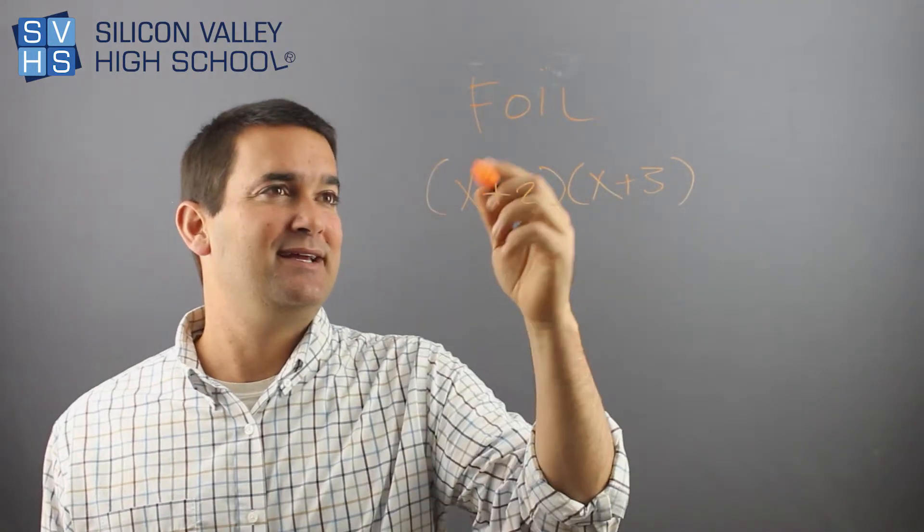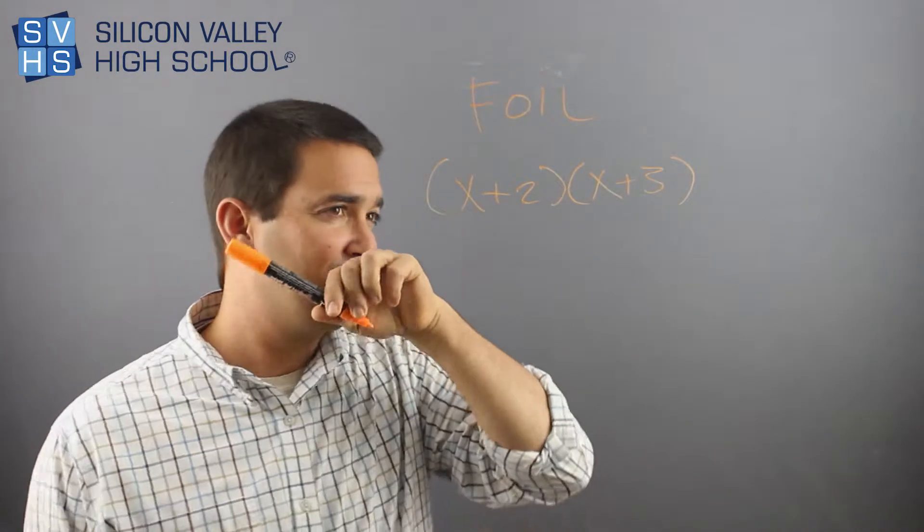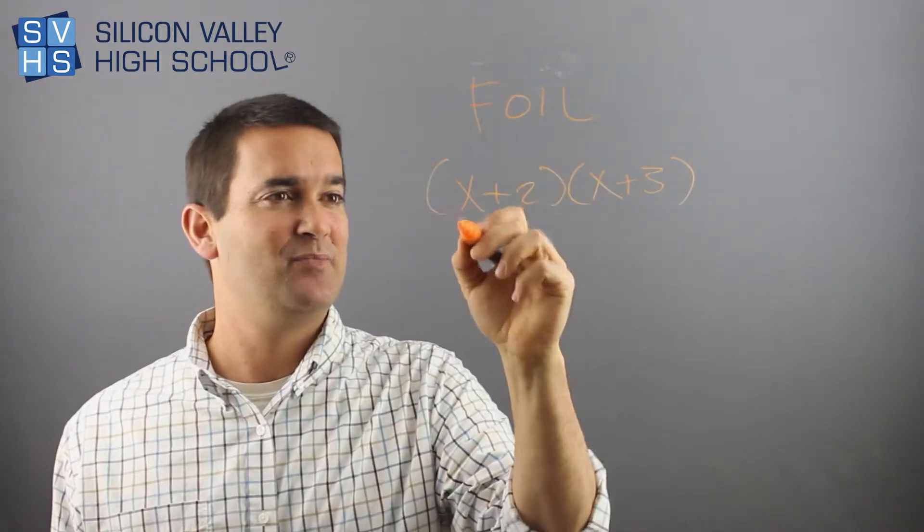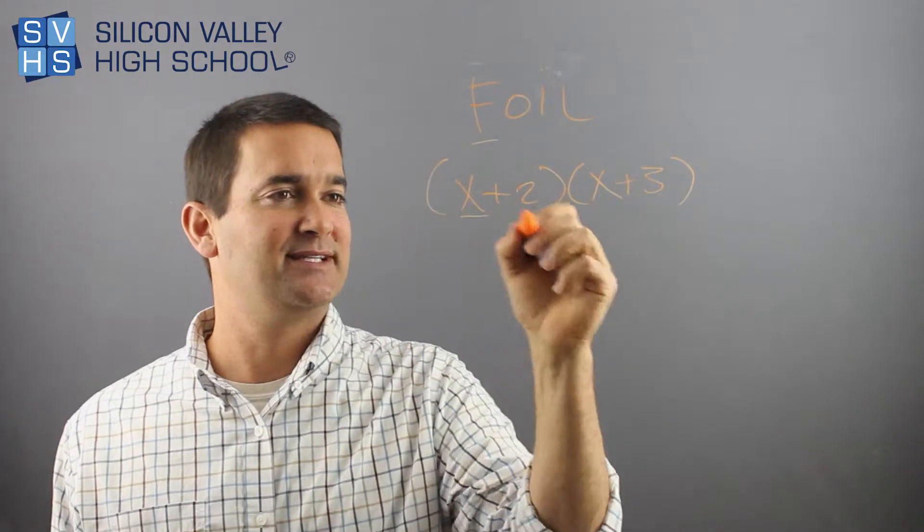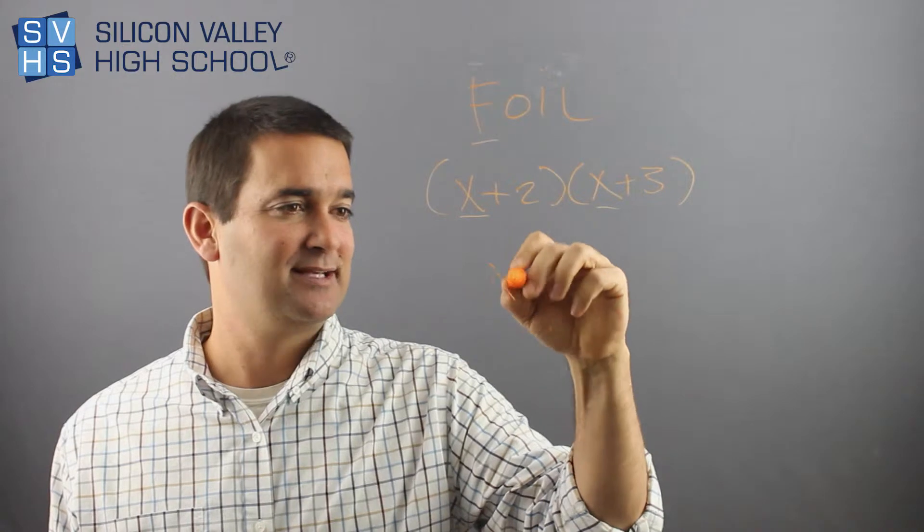But basically, this is what it stands for: first, outside, inside, last. So you're going to do first times first. Let's do the F first. First times first, this guy and this guy. First times first would be X times X is X squared.